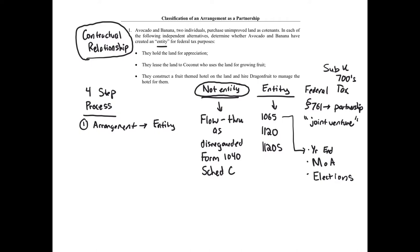To determine whether an arrangement rises to the level of an entity, there's an important Supreme Court case called Culbertson. The court focused on two things: first, do the parties have a profit motive — are they going to share profits? If you're simply sharing expenses, like two accountants sharing office space but operating their businesses separately with no shared profits, that will not rise to the level of an entity. Simply sharing expenses is not enough — you must have a profit motive and share profits.